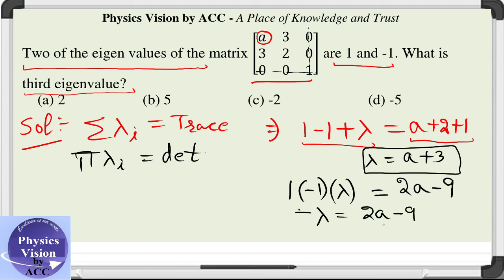Now we will calculate the value of a first, which comes out to be 2a minus 9 is equal to, from the above equation, minus of a plus 3. That implies 2a plus a is equal to 9 minus 3, and that is 6. So 3a is equal to 6, gives us a is equal to 2.